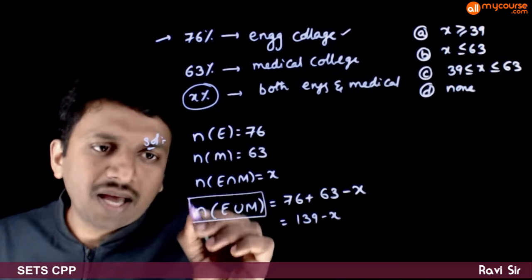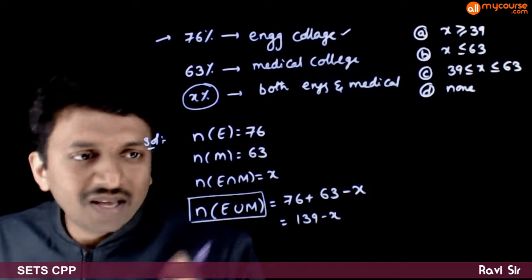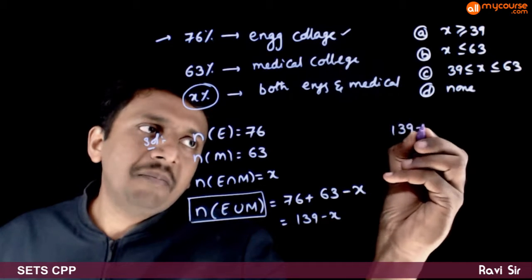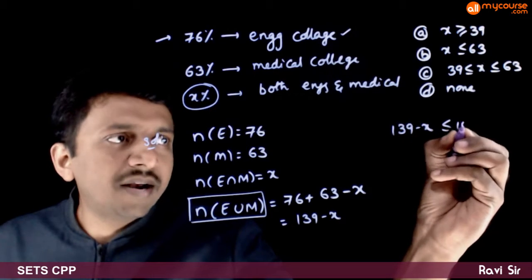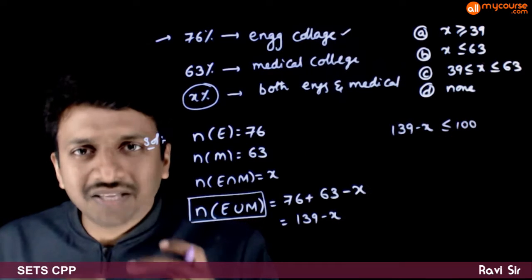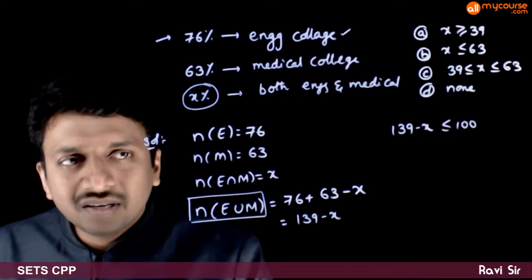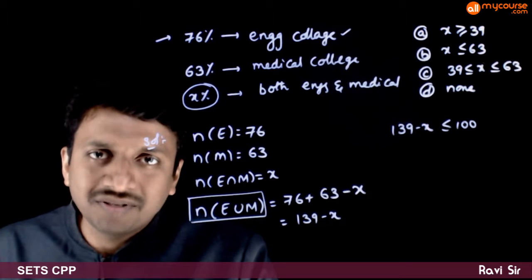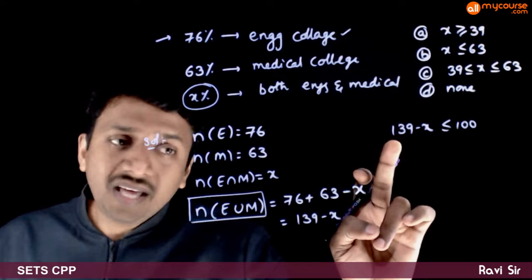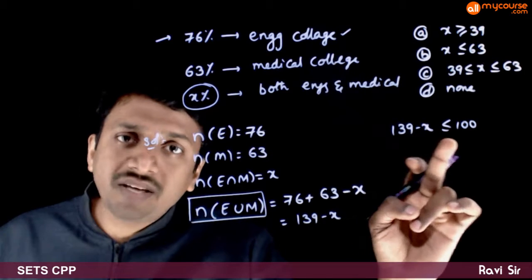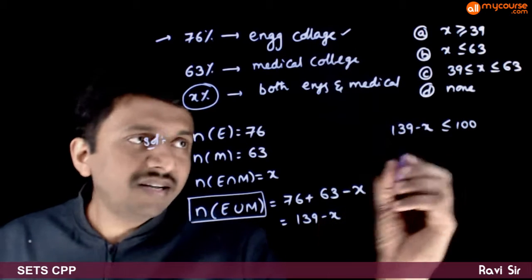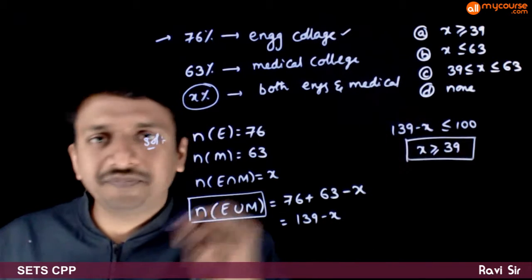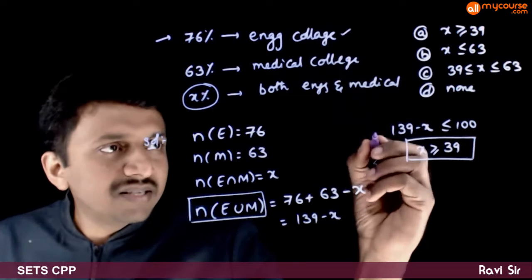What can you say about N(E ∪ M)? N(E ∪ M), which is 139 − X, should always be less than or equal to 100, because there are a total of 100 students — combined, E and M cannot exceed 100. So N(E ∪ M) ≤ 100, which means X ≥ 39. This is the first condition.